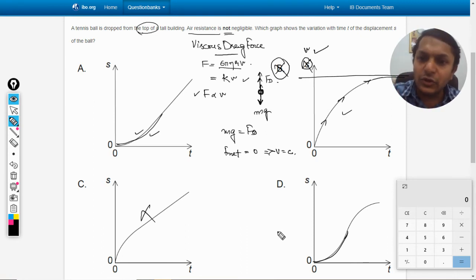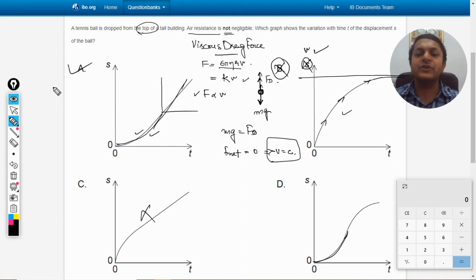So C is also wrong because the velocity is increasing so it will be a parabolic, positive parabolic. And afterwards the acceleration becomes zero and velocity becomes a constant. So at constant velocity, your displacement-time graph is a straight line graph. So afterwards it will become straight line. So option A will be correct and option D will also be wrong.